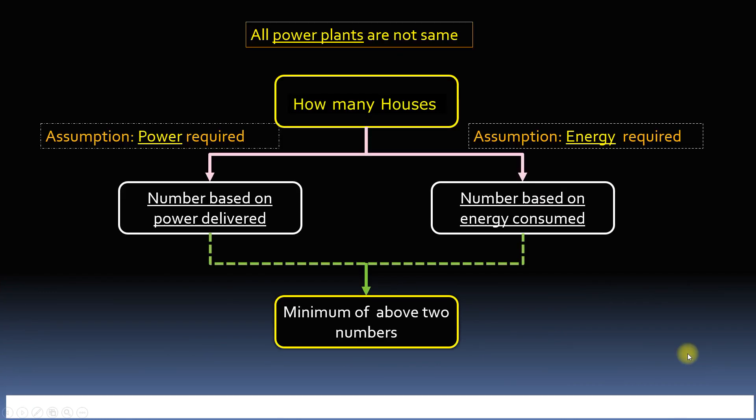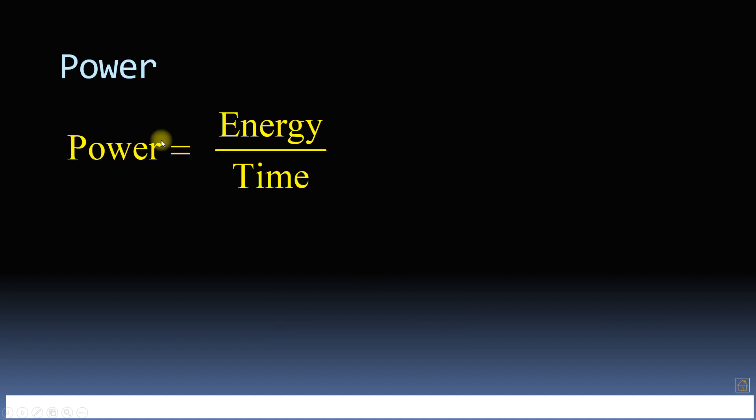Second assumption we must make is how much power is required by one house. Power is the rate at which energy is delivered and the units are watt. We will assume that at any time on average maximum power of one kilowatt is required by each house simultaneously.